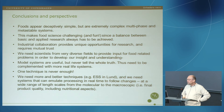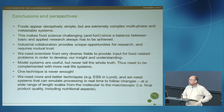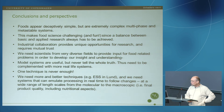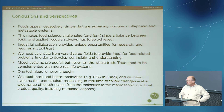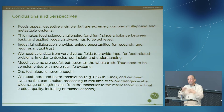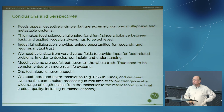My final conclusions: foods appear deceptively simple but are very complex multiphase and metastable systems - you all know that - and this makes food science challenging but also fun. The balance between the basic and the applied always has to be achieved. Industrial collaboration provides unique opportunities for research but requires mutual trust. We need scientists from very diverse fields to provide input for food-related problems in order to develop our insight and understanding. Model systems are useful but not the whole truth - they need to be complemented with more real-life systems. One technique is never enough; don't trust just one technique, and we always need more and better techniques.